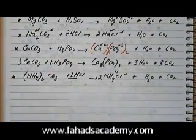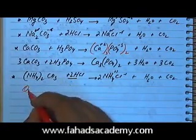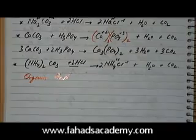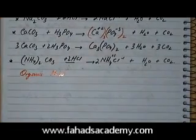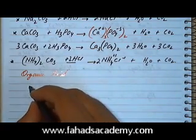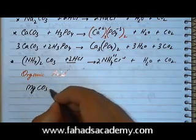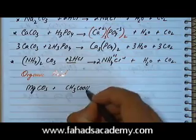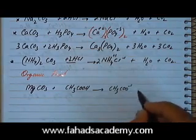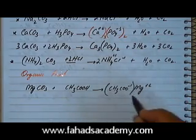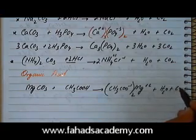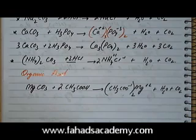Now let's bring in organic acids. Take MgCO₃ reacting with acetic acid, CH₃COOH. The H at the end is replaced, giving CH₃COO⁻ with a charge of minus one. That H is replaced by Mg²⁺, so there should be two acetate groups, giving Mg(CH₃COO)₂ plus a water molecule and a CO₂ molecule. To balance, there should be two CH₃COOH, and the equation is now balanced.